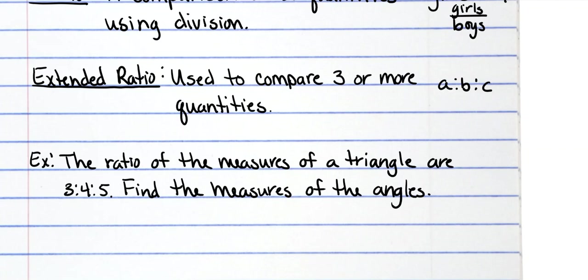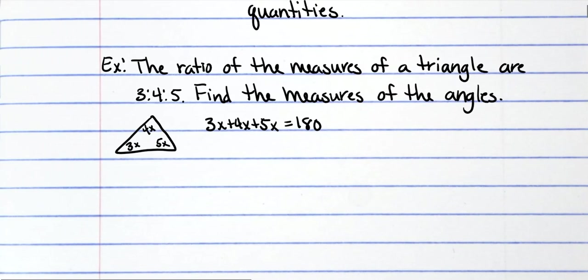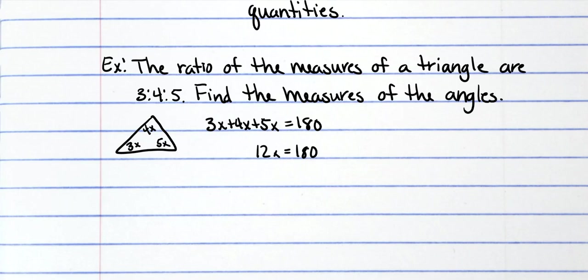Alright, so what that means is you basically have a triangle where one is 3x, one is 4x, and one is 5x. And as we've all done many times before, you add all those together and set them equal to 180. When you combine like terms, you get 12x equals 180. Then I divide both sides by 12 and x is 15. But it wants me to find the measures of all the angles, so the first one is three times x, the other one is four times x, and the other one is five times x.